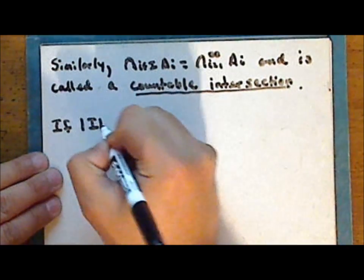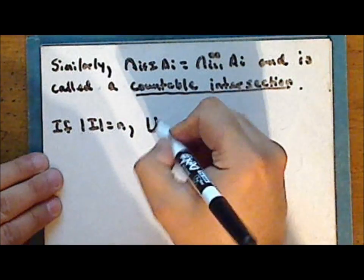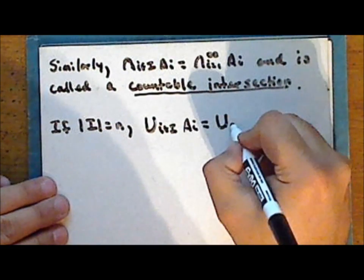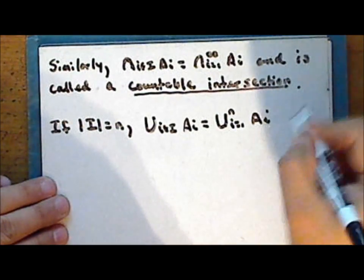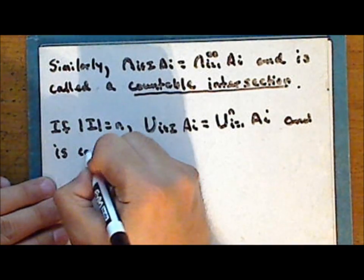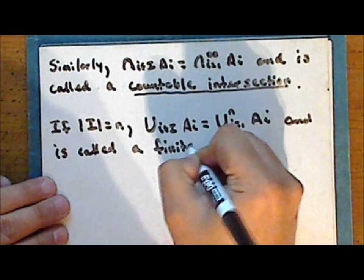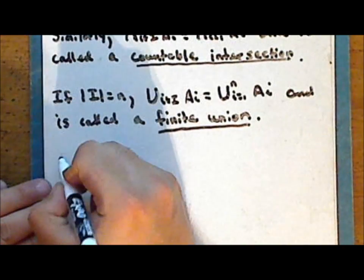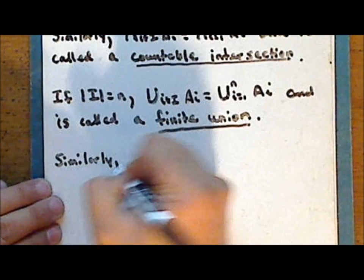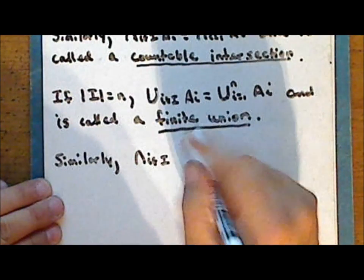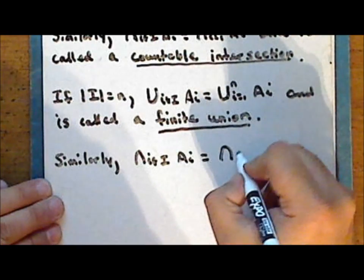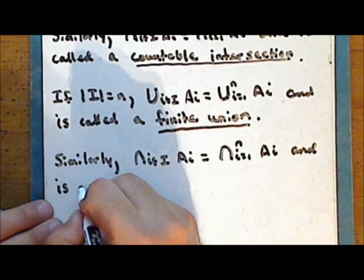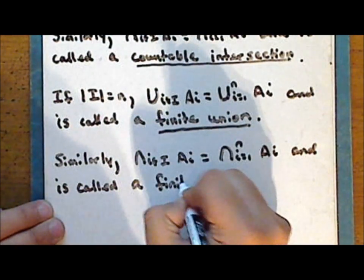If the indexing set is finite, then the union is notated as the union from i equals 1 to n of the sets A sub i, and is called a finite union. Similarly, the intersection is the intersection from i equals 1 to n of the sets A sub i, and is called a finite intersection.